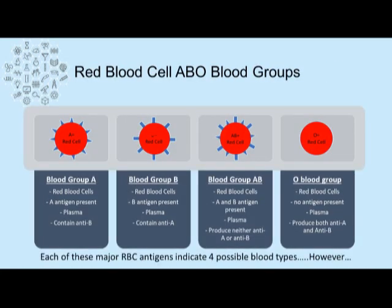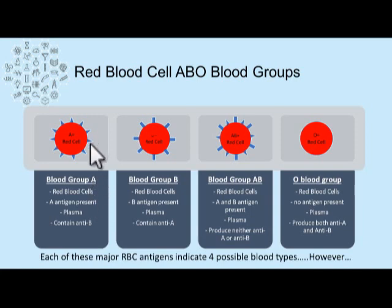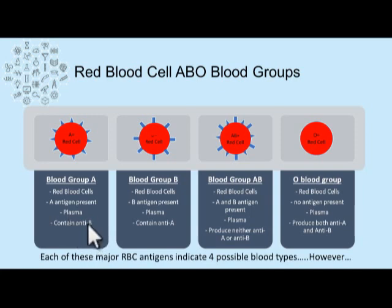There are four major blood types that are determined by antigens found on the surface of red cells. The first blood type is blood type A, which is the result of A antigens on the surface of their red cells. When a patient belongs to blood type A, they have A antigens present on the surface of their red cells, and their plasma contains anti-B antibodies, because they do not have a B antigen. They carry anti-B in their plasma.